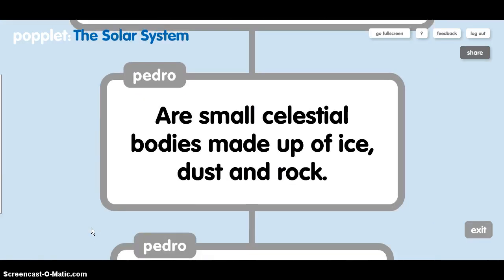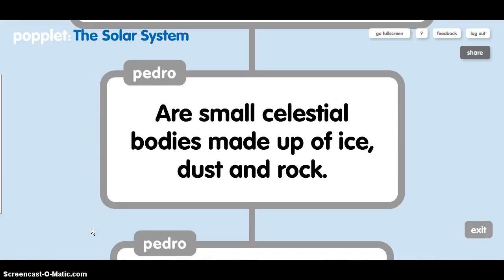Comets. There are small celestial bodies made up of ice, dust, and rock.